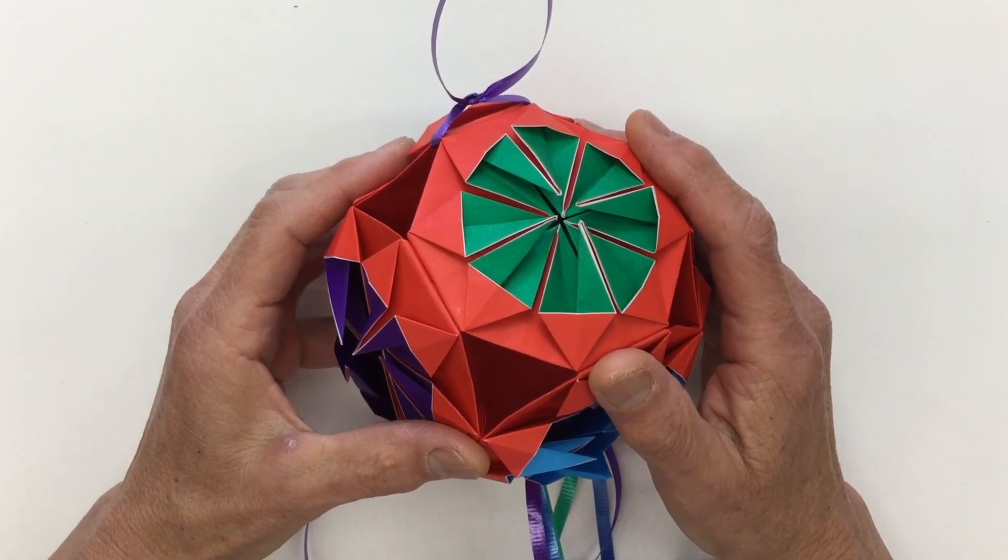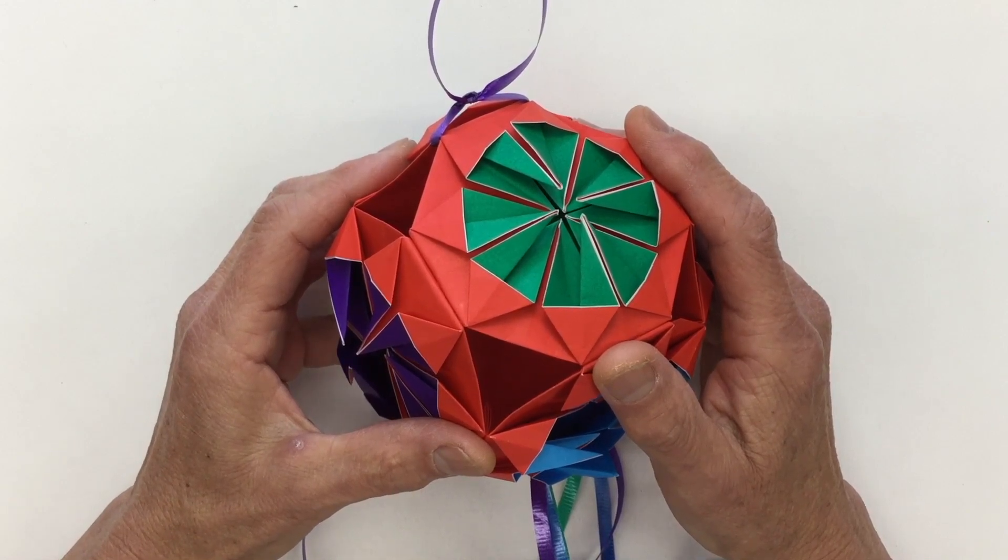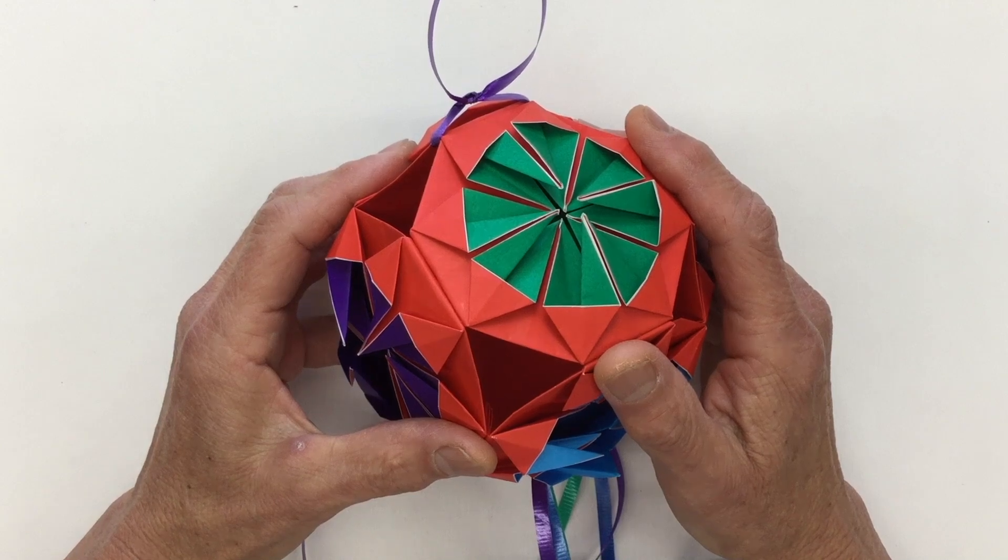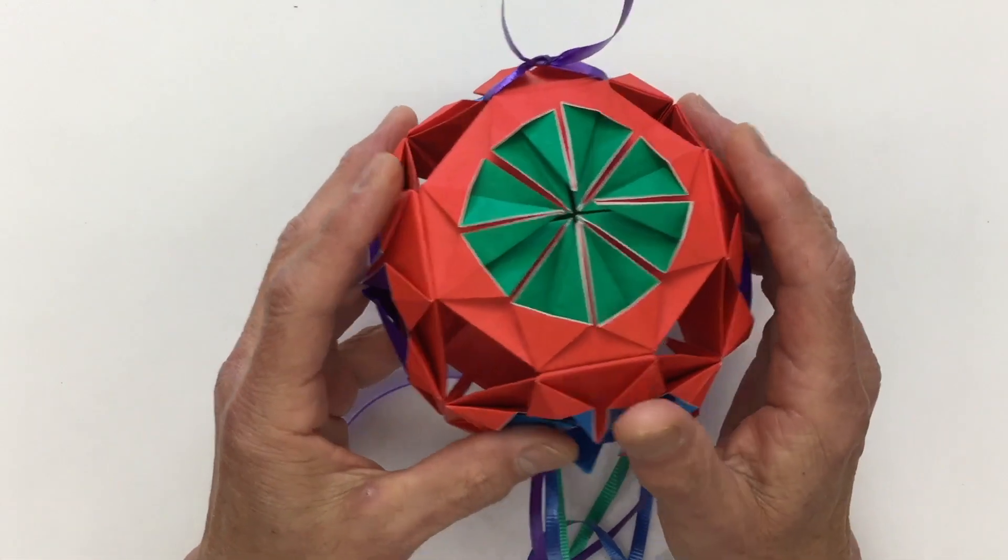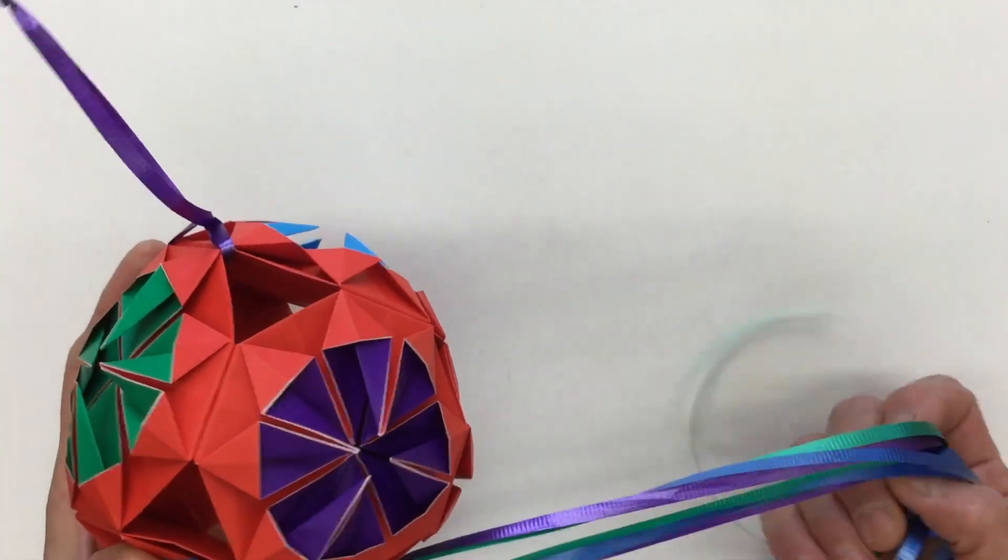Originally, the kusudama was a ball of herbs that people hung in their homes to ward off evil and to bring good health. Over time, the kusudama became more decorative, but the meaning remains the same, a wish for good health and good fortune.